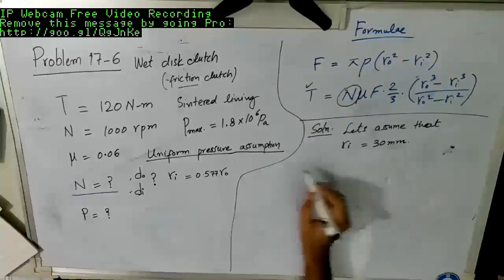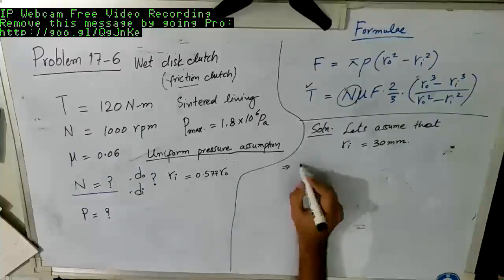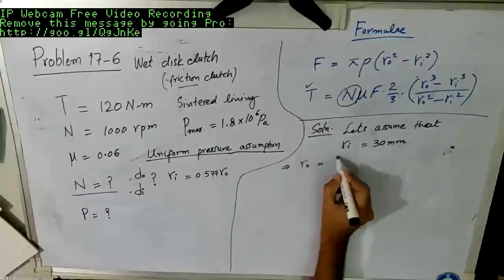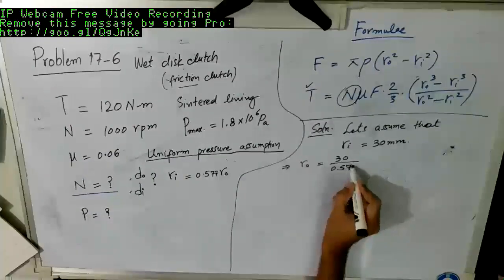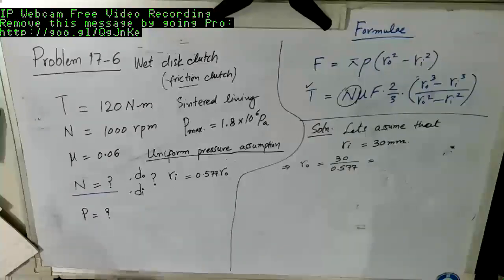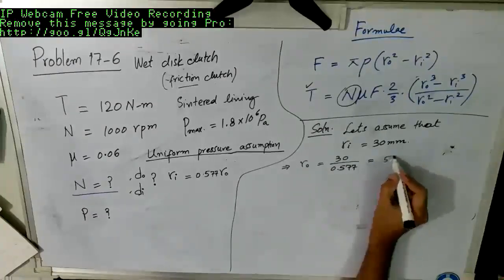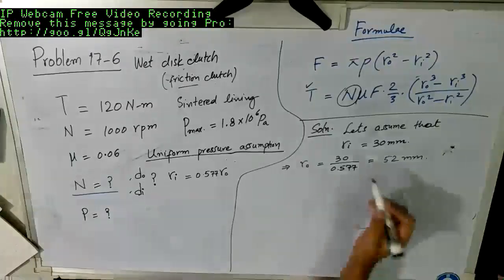If R inner is 30 millimeter, this means that we can find out R outer, which will be 30 divided by 0.577, and this value is going to be about 52 millimeter.